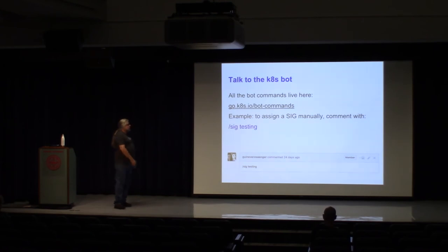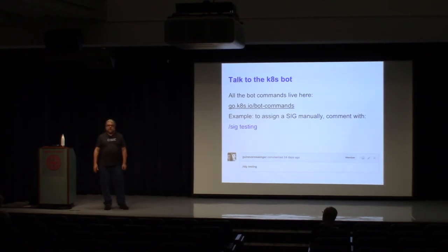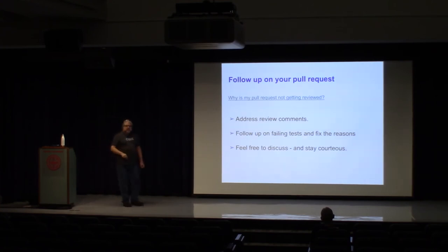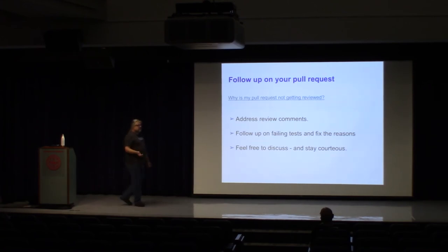The bot puts all kinds of labels to tell us status — it's a very heavily automated project. You can talk to the bot and assign things using forward-slash instructions. If your pull request isn't assigned to a SIG it will almost certainly never be reviewed, so find the right SIG, tag it, then go to a SIG meeting and get yourself on their agenda to say 'I submitted this, can anybody take a look?' You do sometimes need to get in front of a person because we have new stuff going into the project all the time.